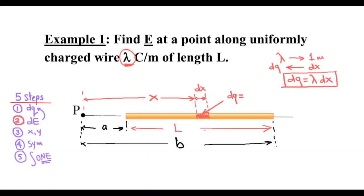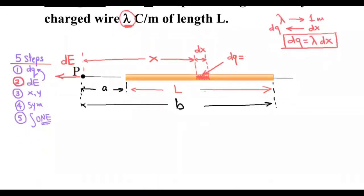To get the electric field due to this small element, I draw the electric field out of this charge — it passes through the point in the direction to the left. The electric field due to this small element is called dE. The equation for dE is just like the electric field due to a point charge: dE = ke · dq / x², where x is the distance from the element to the point.